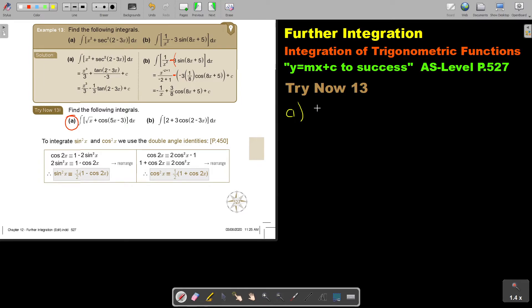Let's start. Number 8. Integrate the square root of x plus cos 5x minus 3 dx.